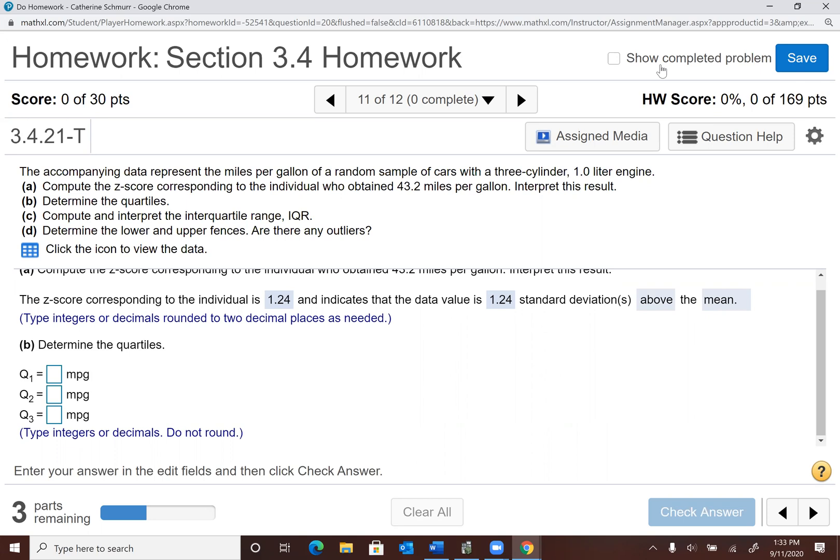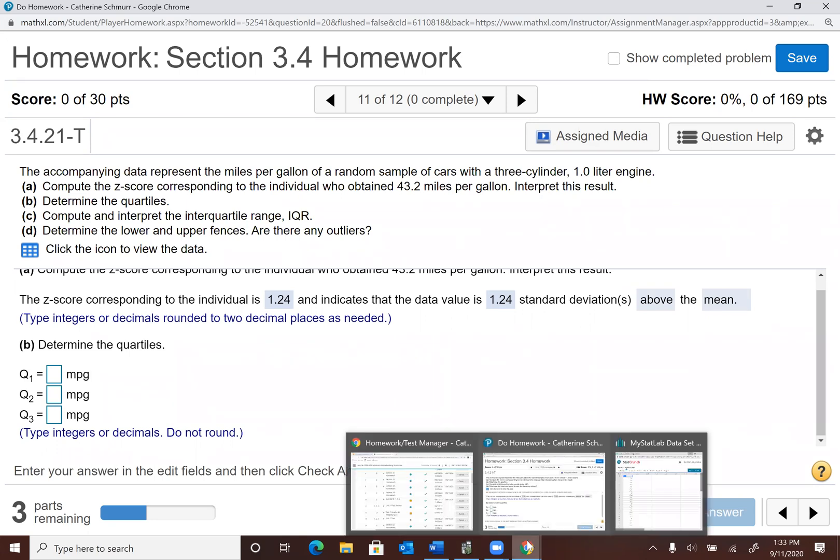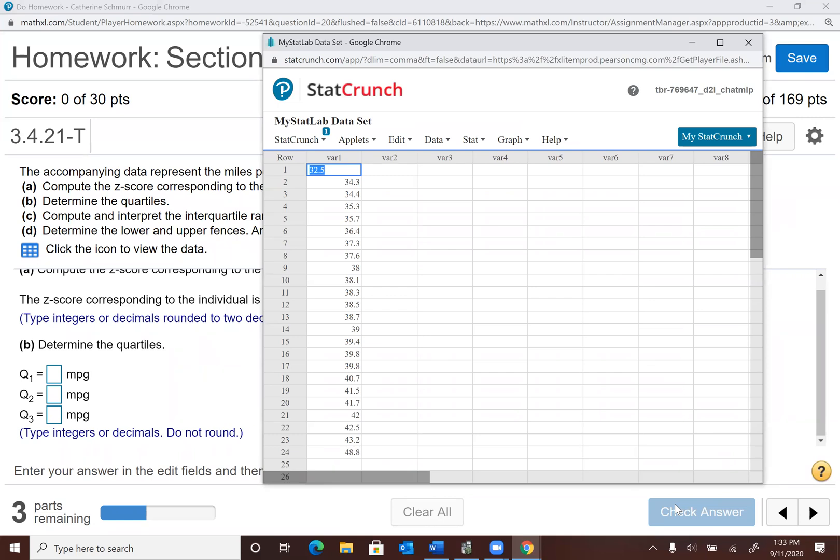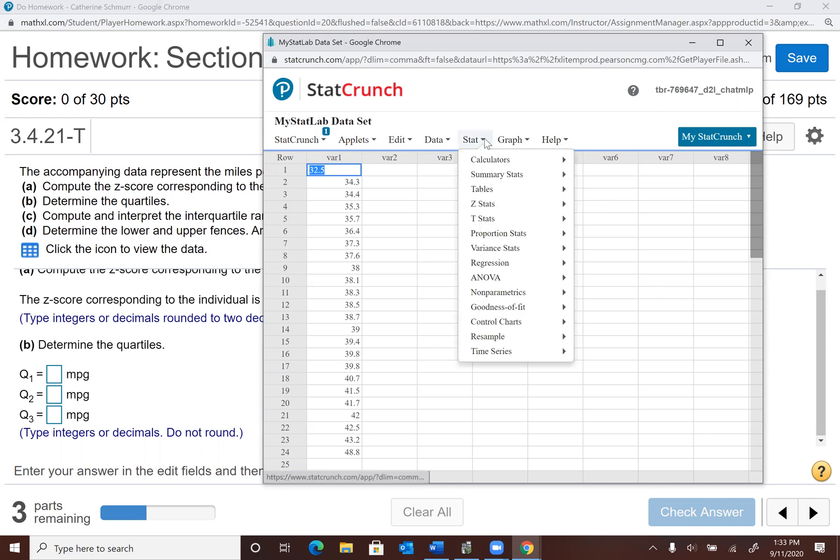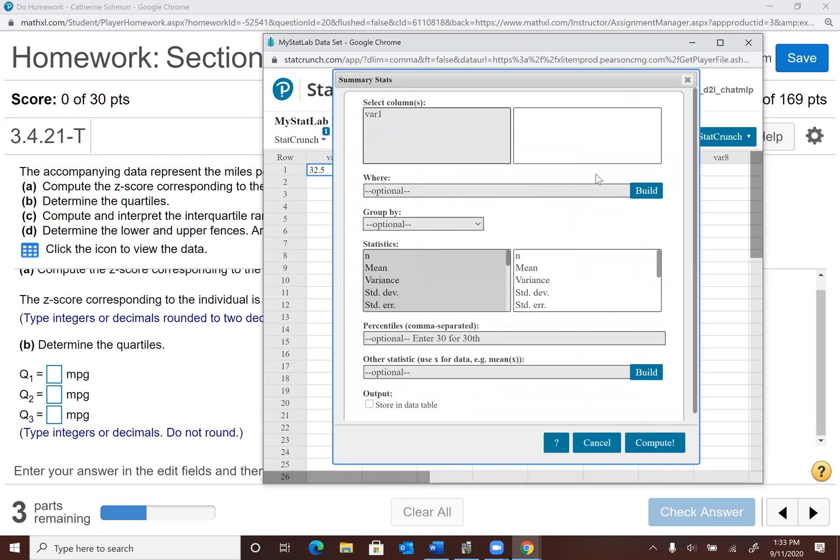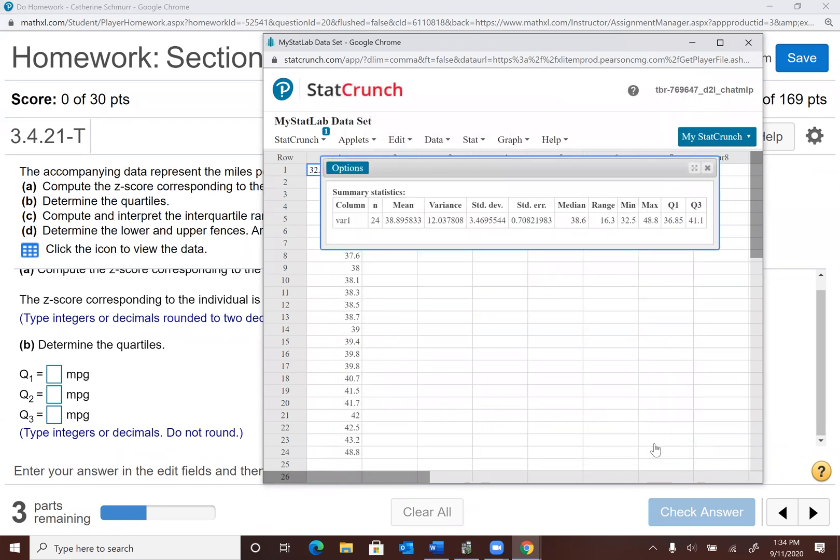Okay, now the next part of the problem, determine the quartiles. That's where we left off. So let me pull up my data. I made sure that it would load this time. Okay, so I have my data. And what I want to do to find the quartiles is go to Stat, Summary Stats, Columns. And I'm going to select variable one or column one. And I'm just going to leave these default items highlighted. So I'm not going to actually click on anything here. I'll just go with the default items and hit Compute.